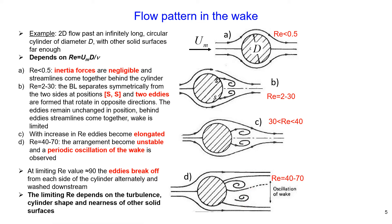The limiting Reynolds number depends on the turbulence level in the flow, the cylinder shape, and the availability of other solid surfaces within close proximity to the cylinder.